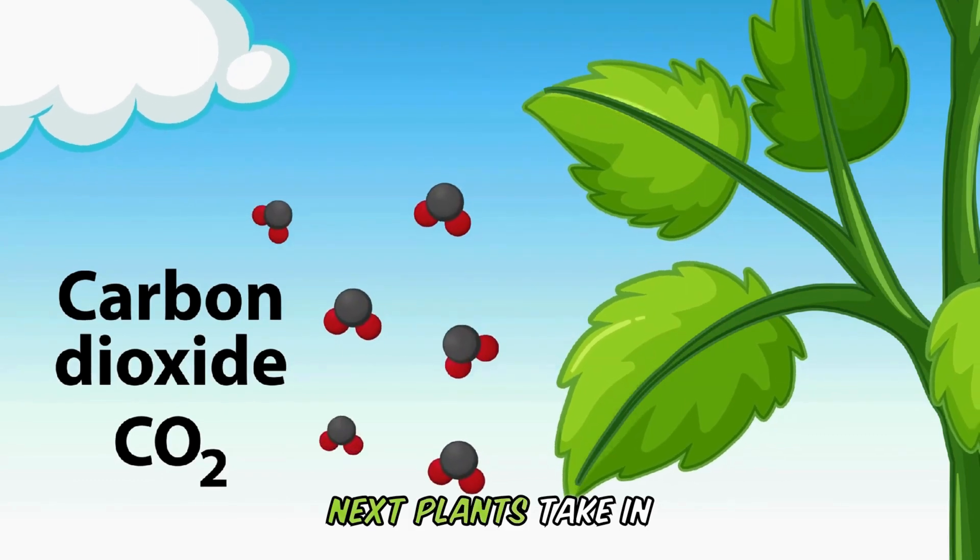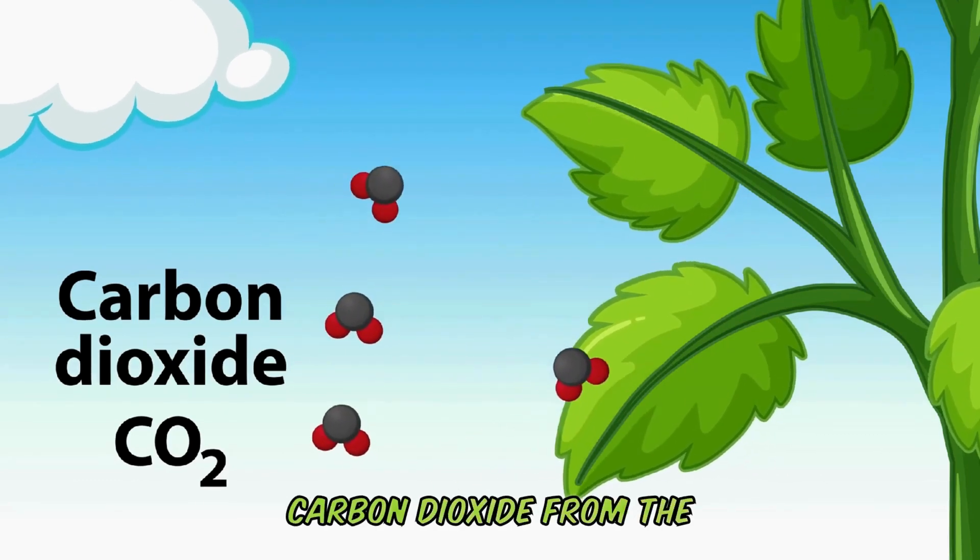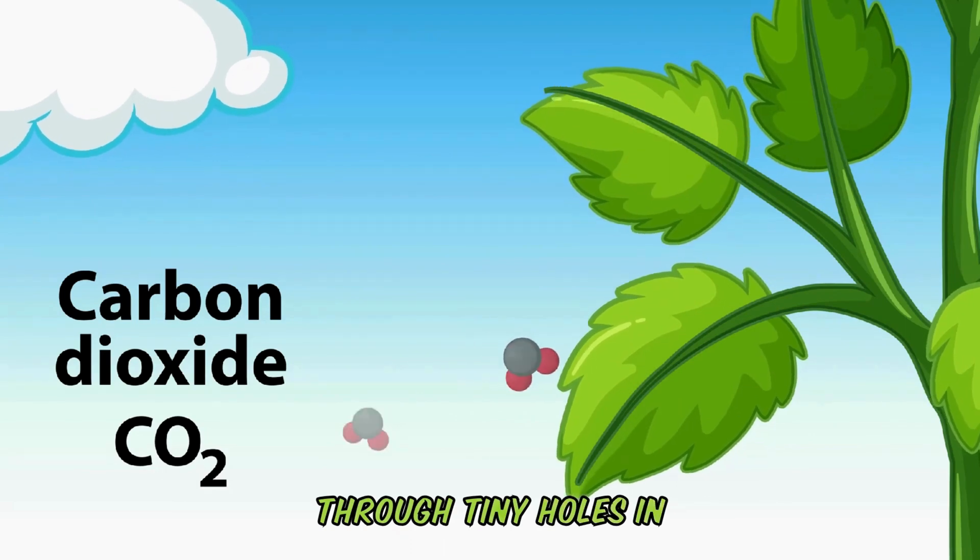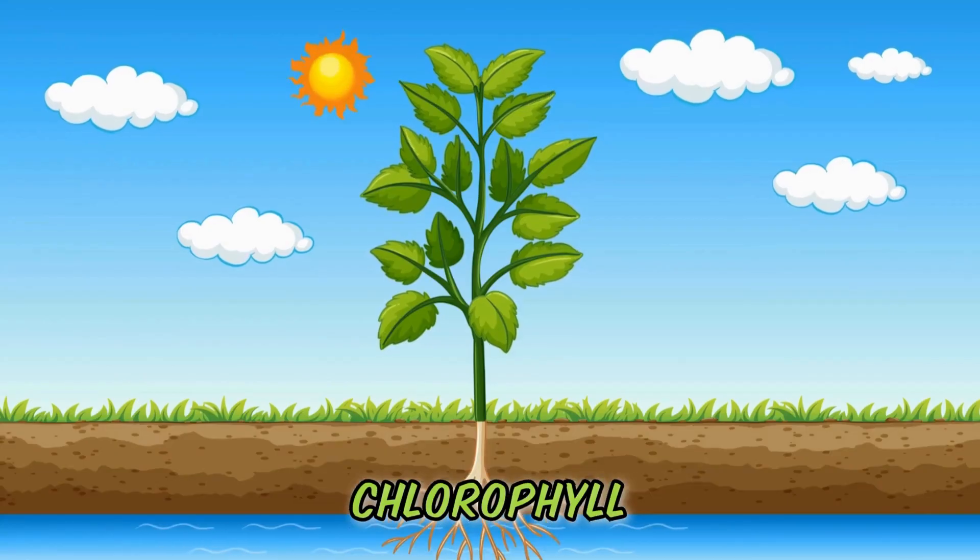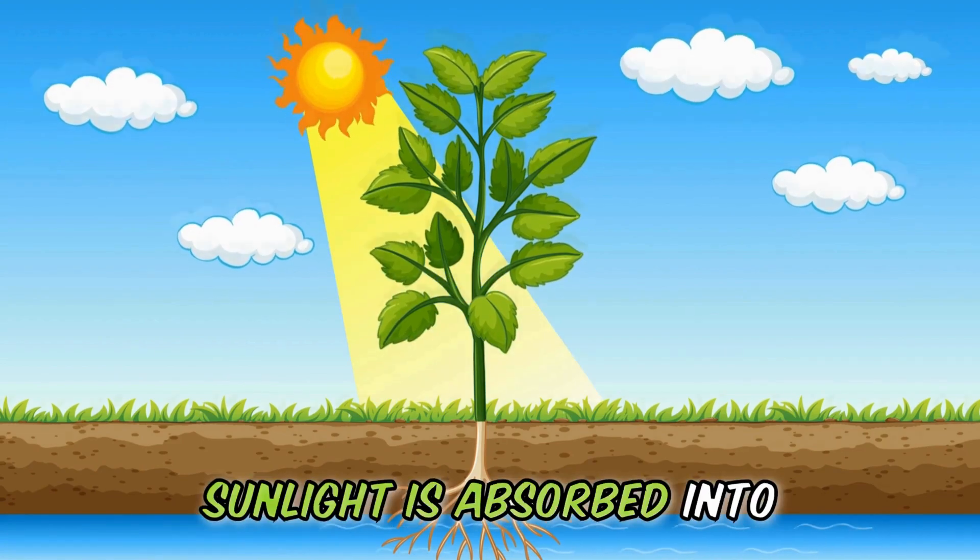Next, plants take in carbon dioxide from the air. They grab it through tiny holes in their leaves called stomata. With the help of chlorophyll, sunlight is absorbed into the leaves.